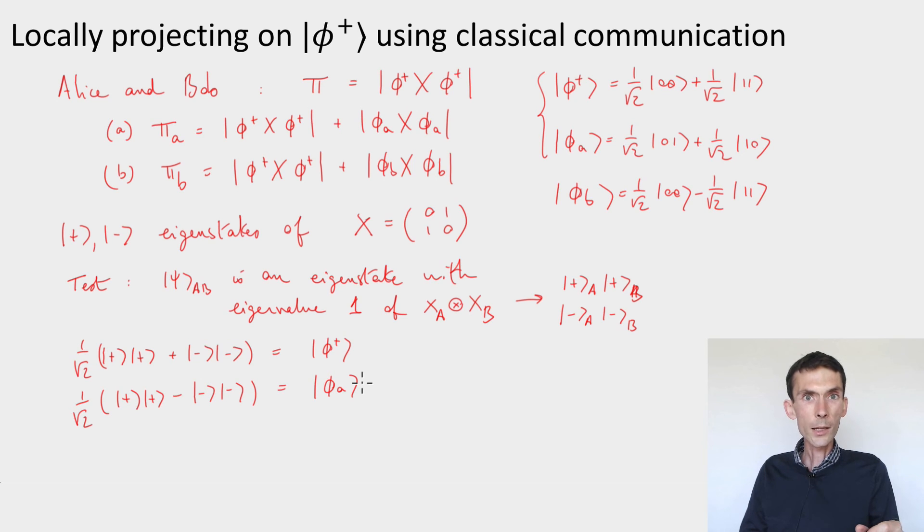And similarly, you can check that when they're making the checks in the computational basis, then this is equivalent to performing the projector on the span of |φ⁺⟩ and |φ_B⟩. So that jointly, these two tests are equivalent to performing a rank one projection on |φ⁺⟩, to checking that the state between Alice and Bob is entangled.